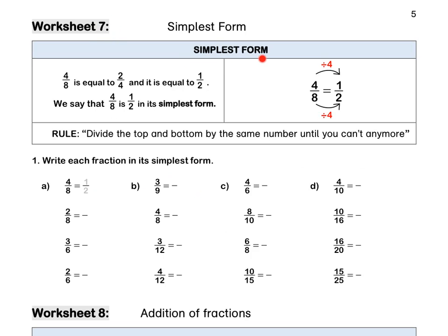Worksheet 7: Simplest form. Four eighths is equal to two quarters and it is equal to one half. We say that four eighths is one half in its simplest form. We've divided 8 by 4 to get 2, and 4 by 4 to get 1. The rule is to divide the top and the bottom by the same number until you can't anymore. Question 1: Write each fraction in its simplest form. For A, we divide by 4 top and bottom. Let's look at B.